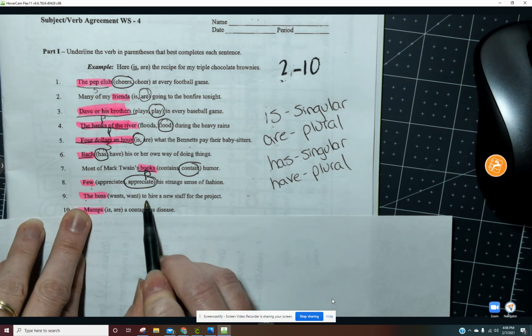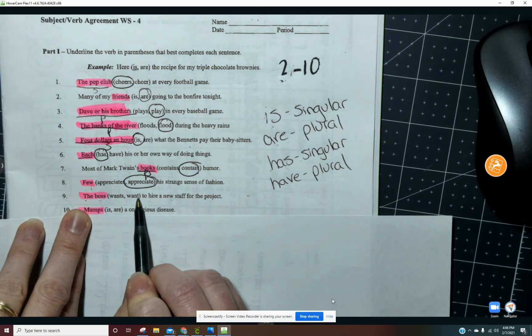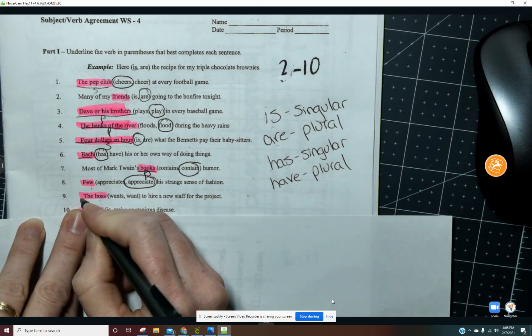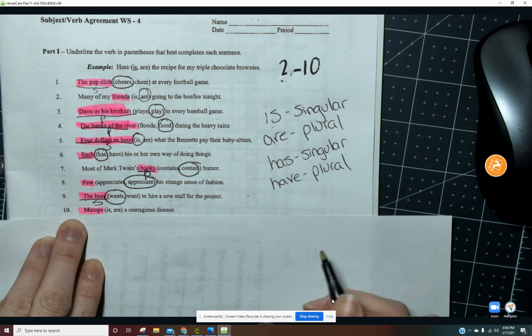The boss wants to hire a new staff for the project or the boss want to hire. Since this is singular, we need an S here on wants.